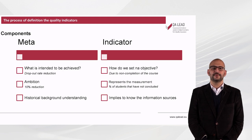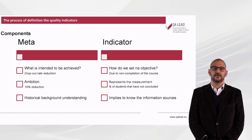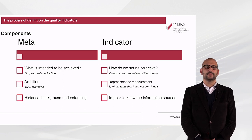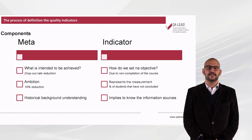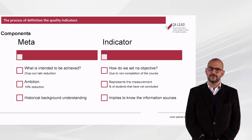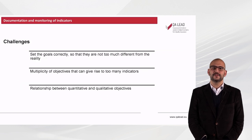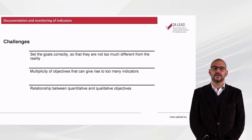The indicator also represents the measurement itself. For example, as seen previously, the percentage of students that have not concluded. For a proper indicator measurement, it is essential to know the sources of information. In this, we will talk about documentation and monitoring of indicators.